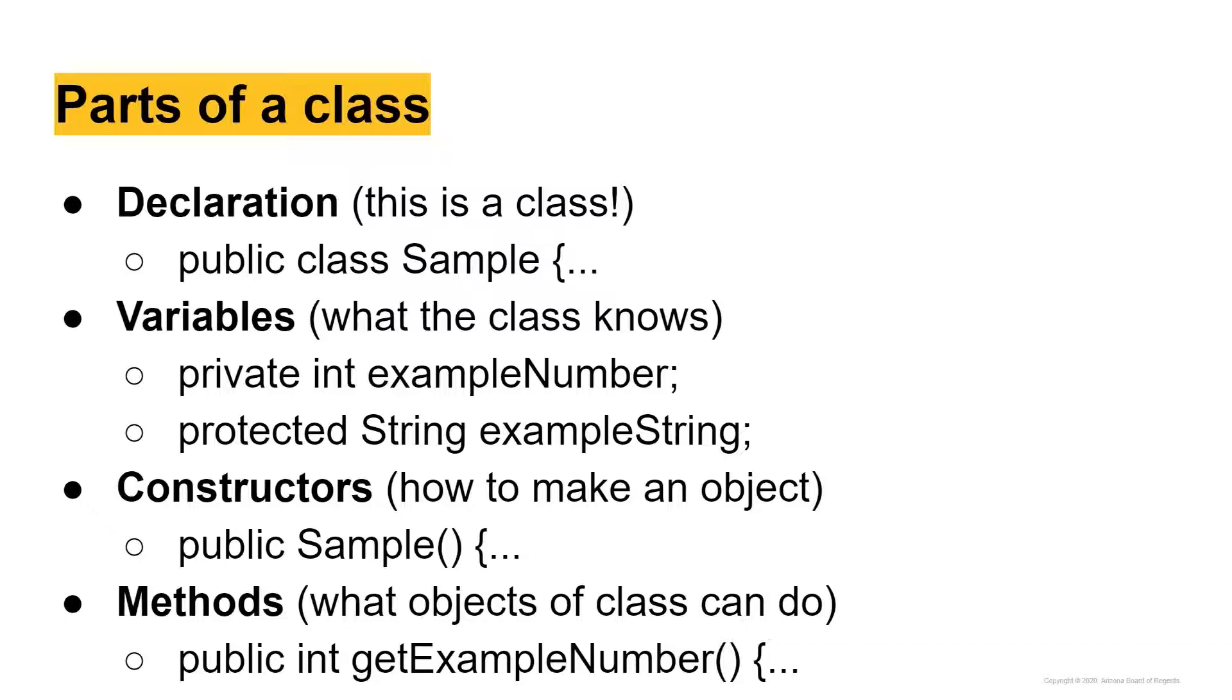And that is unlike sometimes when we just declare variables normally within a method. We leave out that private or protected or public prefix. But the reason we do this is because we want to indicate to the program, to the computer, the access level of these variables.